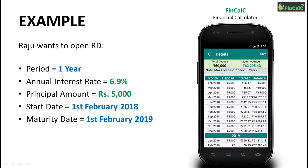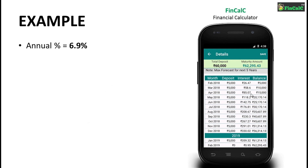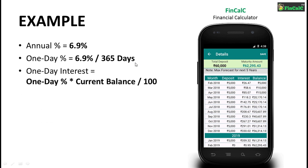As we know, the annual interest rate is 6.9% on this recurring deposit. The interest rate for 1 day will be 6.9% divided by 365, since there are 365 days in a year. Once we get the interest rate for 1 day, we can calculate the interest earned on this recurring deposit for 1 day. We multiply the 1-day interest rate with the current balance in the recurring deposit and divide by 100, which gives us the interest earned for 1 day.